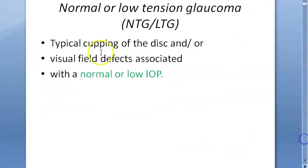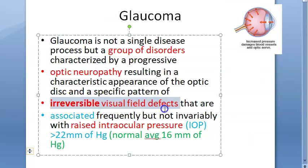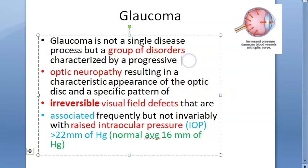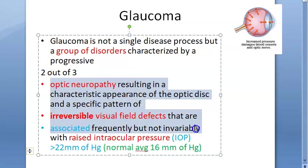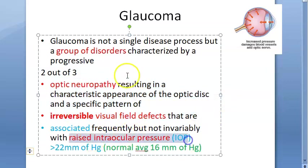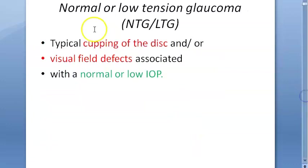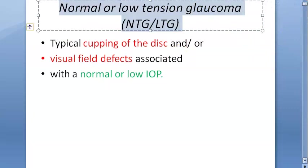So glaucoma involves three things: optic neuropathy, visual field effects, and raised intraocular pressure. At least two out of these three should be present. If you have optic neuropathy and irreversible visual field effects but no raised intraocular pressure, that is called normal tension glaucoma or low tension glaucoma — NTG or LTG.